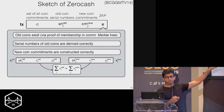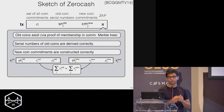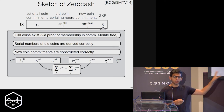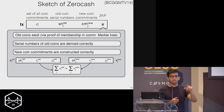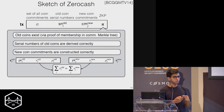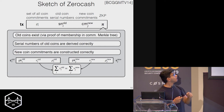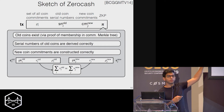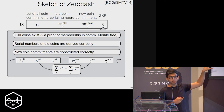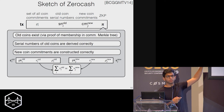You have to prove that the values are integers of, say, 64 bits, and when you add these as integers, the value is conserved — that's implicit in the SNARK. There are two steps: first you prove that the old coins exist, then you prove that the serial numbers are derived correctly. Outside the zero knowledge proof, you check that the serial numbers are not duplicated across past transactions.